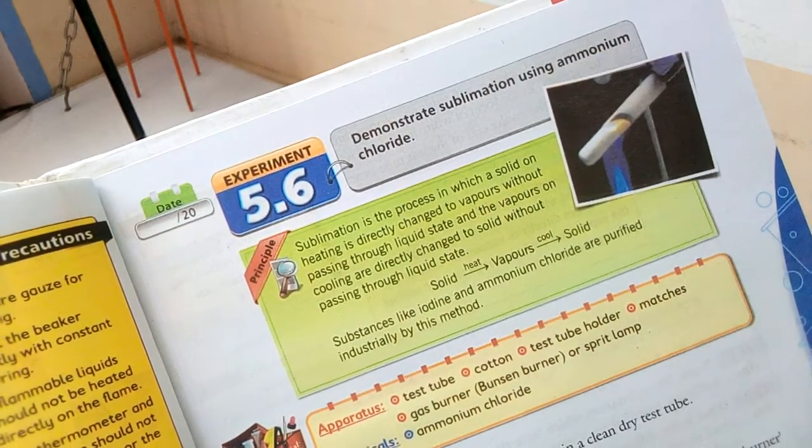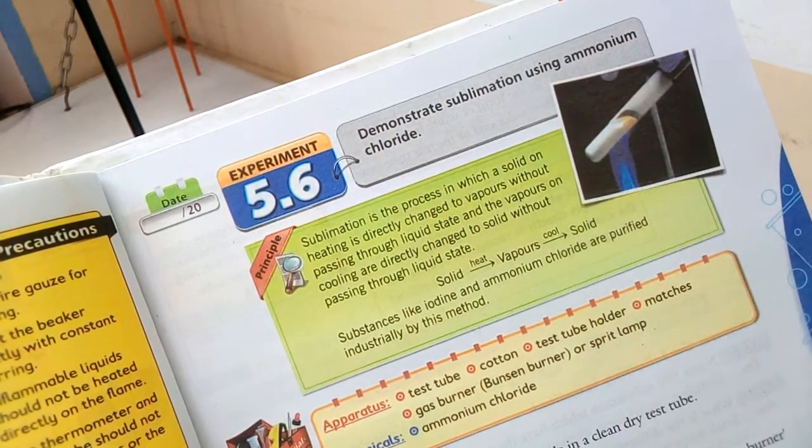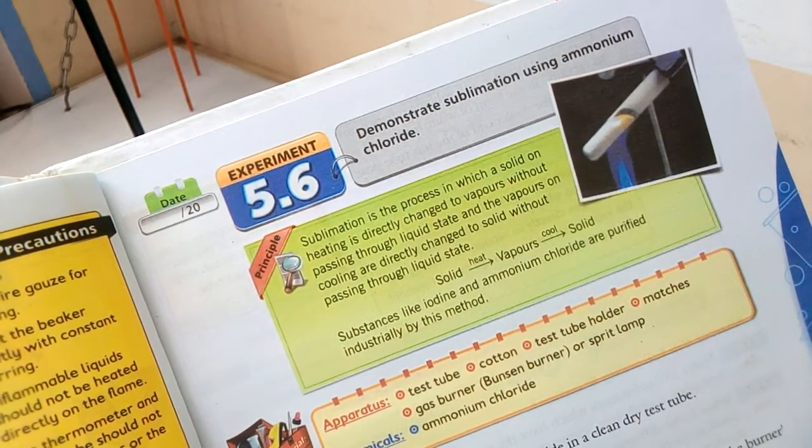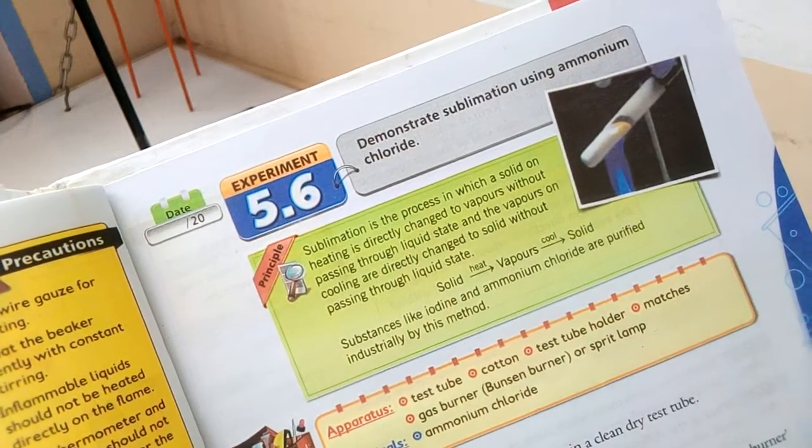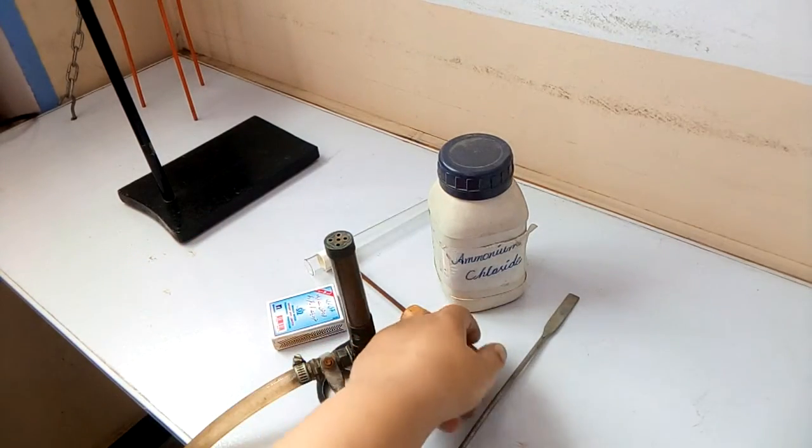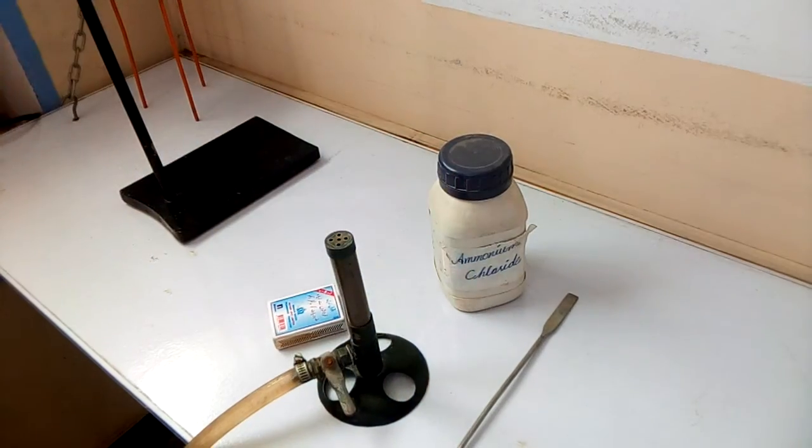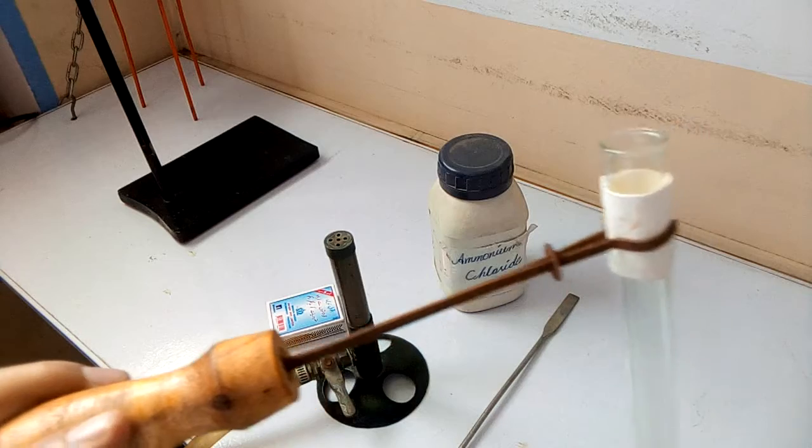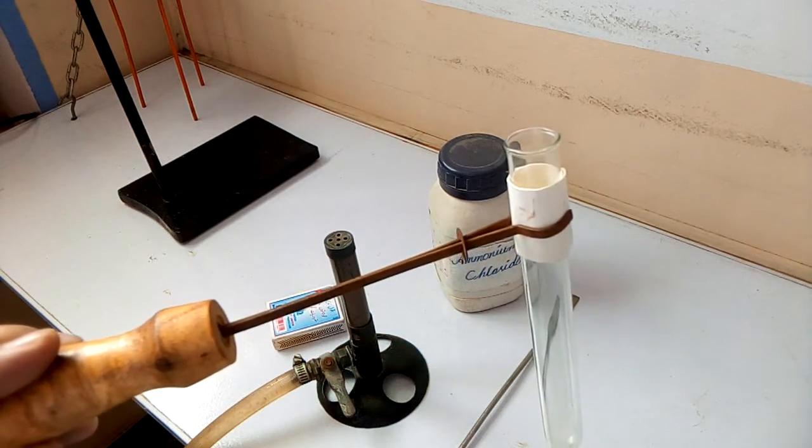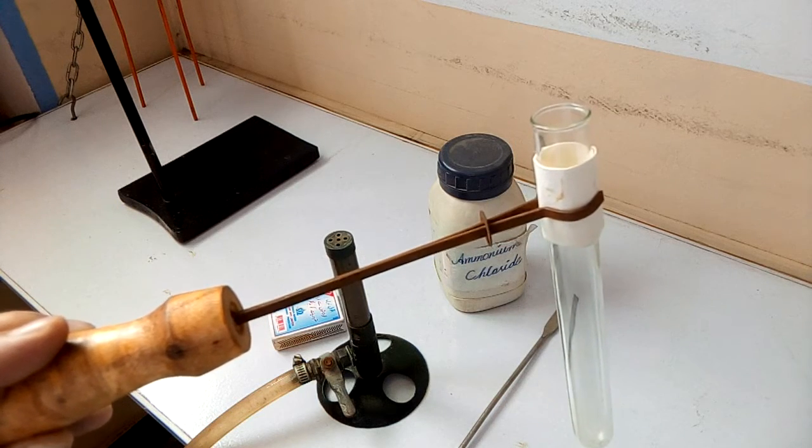The apparatus that we require for the experiment can be seen on the page. The apparatus which we need is a test tube. We have wrapped a wet filter paper along the side of the test tube and fixed the test tube in the test tube holder.